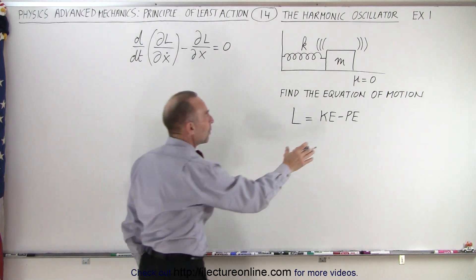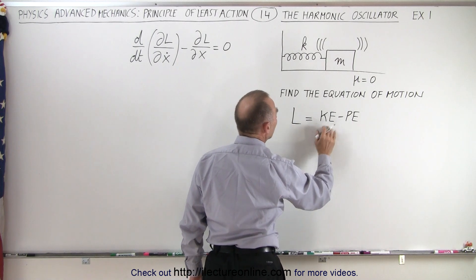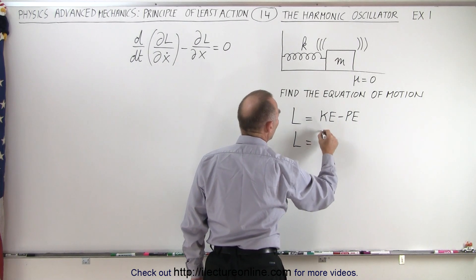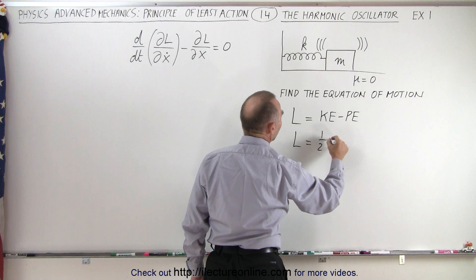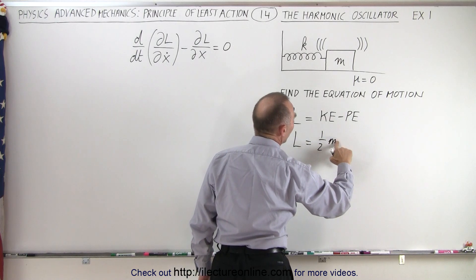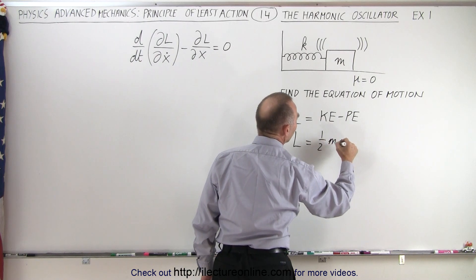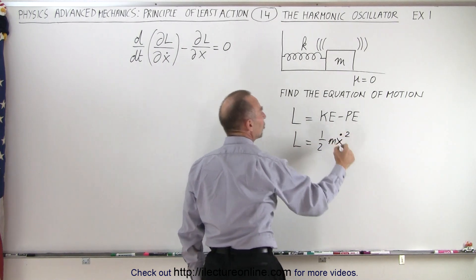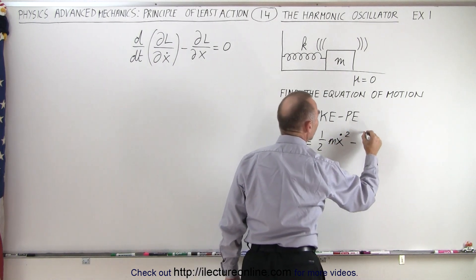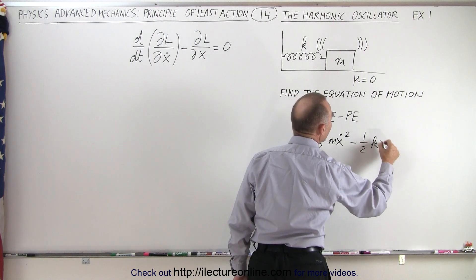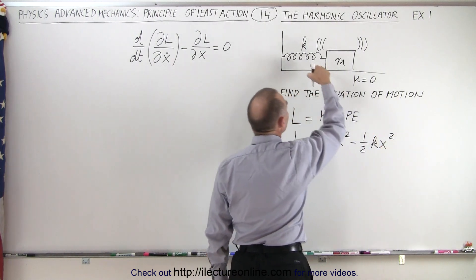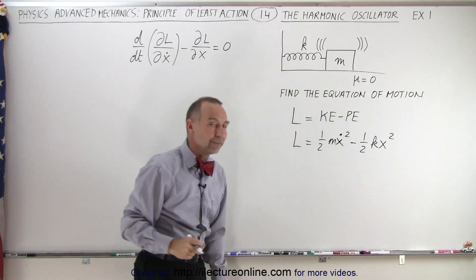Let's plug in what we have. The kinetic energy of the object moving back and forth is one-half m x-dot squared. And the potential energy is one-half kx squared, because that's the potential energy stored in a compressed spring. So our Lagrangian is one-half m x-dot squared minus one-half kx squared.